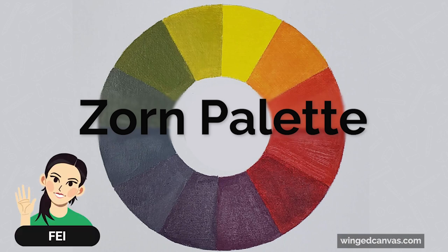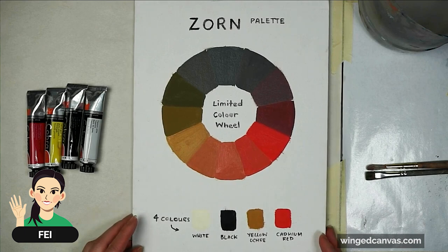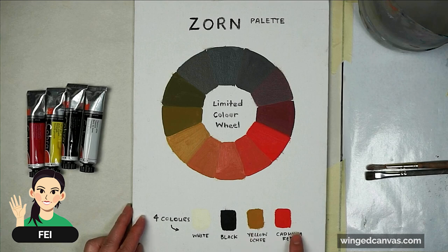We are going to create a color palette called the Zorn palette. This is an example of the Zorn palette painted in oils. For this palette, it's quite muted. I used a very muted yellow ochre, cadmium red, white and black.